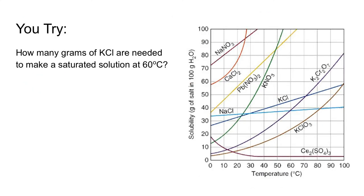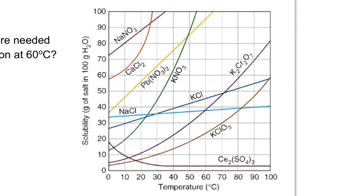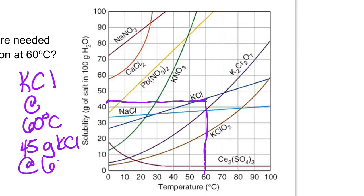Now you try: how many grams of KCl are needed to make a saturated solution at 60 degrees Celsius? KCl is the blue line on the curve. We find 60 degrees Celsius and go up to the blue line. Going across, it looks to be about 45 grams of KCl at 60 degrees Celsius.